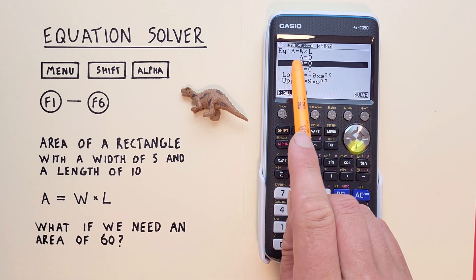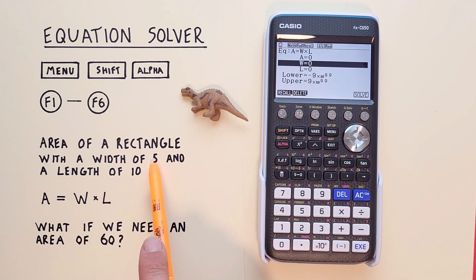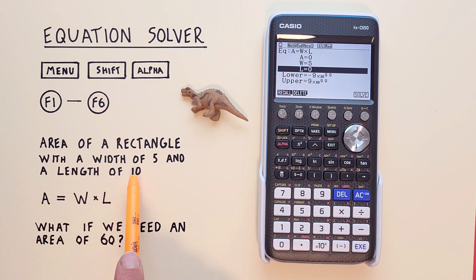Scroll down to W, which was 5, and hit EXE. And then L for length was 10. We can enter that. Again, hit EXE.